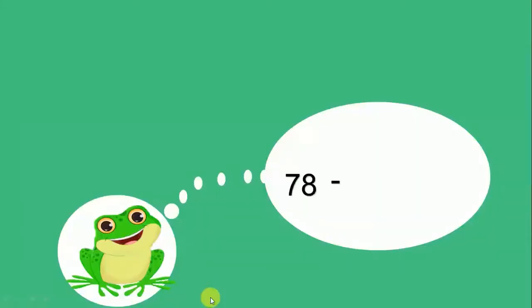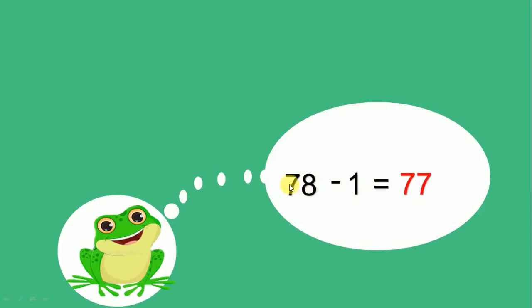78 subtract 1 equals 77. Let's subtract them. 8 subtract 1 equals 7. And 7 subtract 0 equals 7. We have 77.